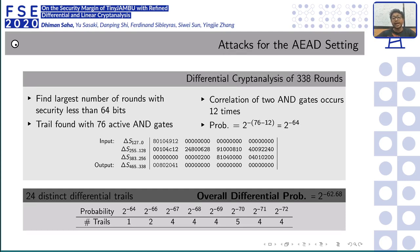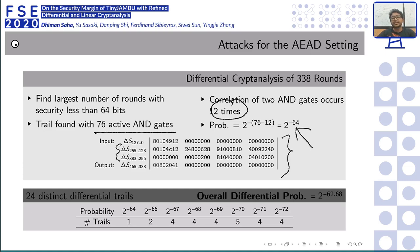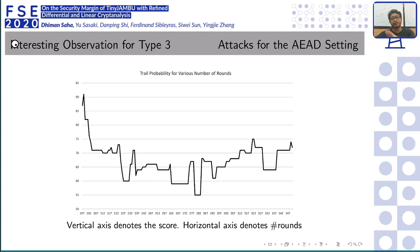For our second strategy — finding the largest number of rounds that violates the 64-bit barrier — we found a trail with 76 active AND gates and 12 correlated couples giving 2^{-64}. For 338 rounds, we found 24 distinct trails, and combining them yields an effective probability of 2^{-62.68}. So 338 rounds is the maximum we could reach while violating the designers' security claim.